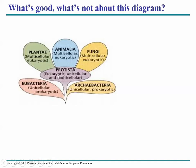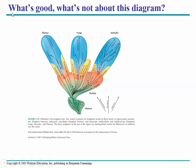What about this diagram? What do you think I'm going to like and not like? What I like is it even more clearly shows the evolutionary relationships between plants, fungi, and animals with protists — some lineages evolved into plants, some into fungi, and some into animals. What's not correct is they group all prokaryotes into kingdom monera, and we no longer consider all prokaryotes to be in one kingdom called monera.